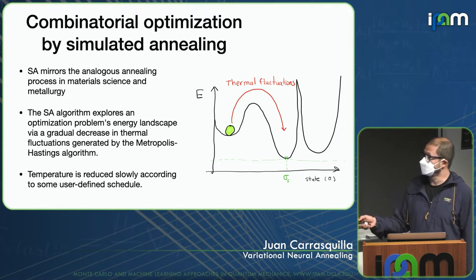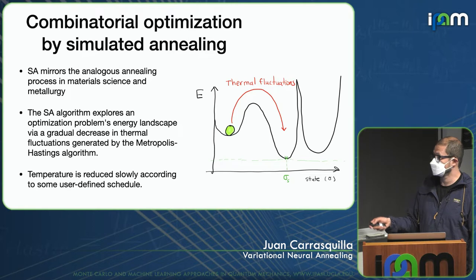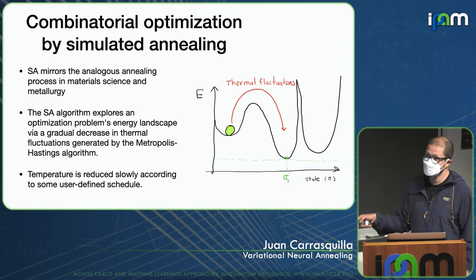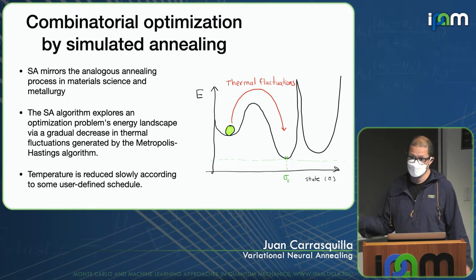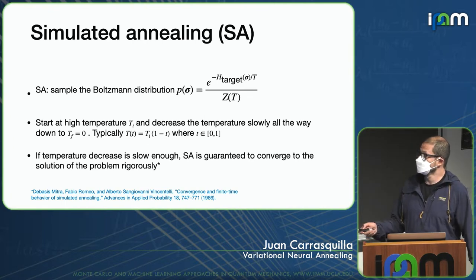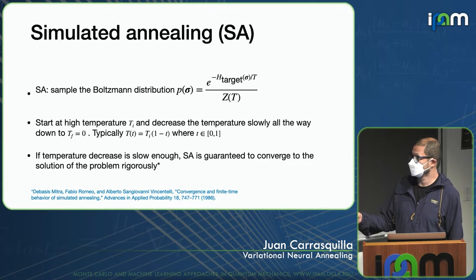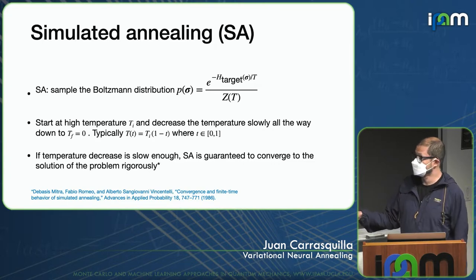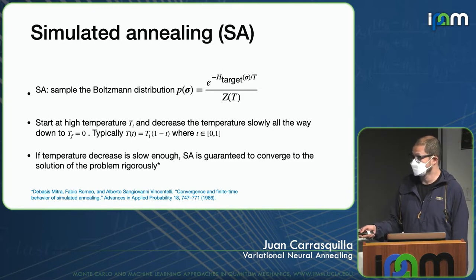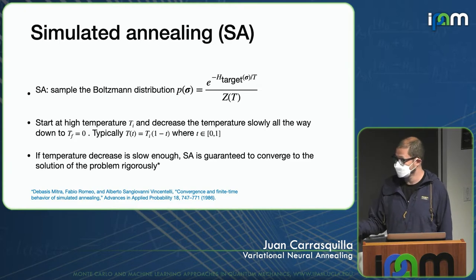The exploration is done through thermal fluctuations over the state space. These fluctuations allow you to jump over energy barriers and hopefully find the spin configuration that minimizes the energy of the Hamiltonian. What you do is sample the Boltzmann distribution e^{-H_target/T}, starting at high temperature and decreasing to zero, typically with a linear schedule. It has been proven that if you do this process slowly enough, simulated annealing converges to the solution rigorously.